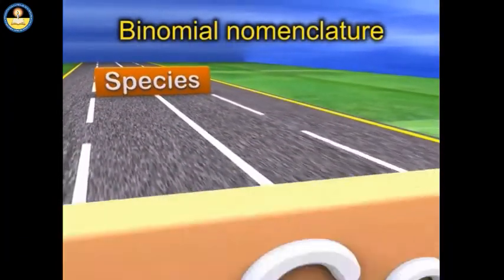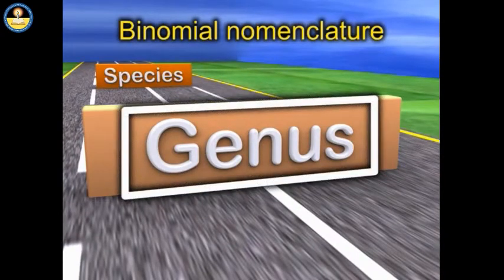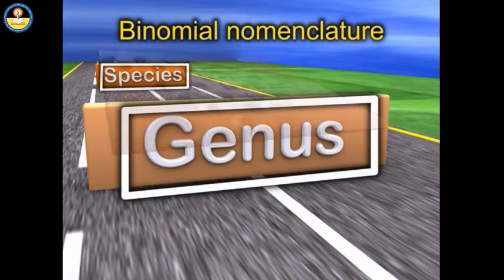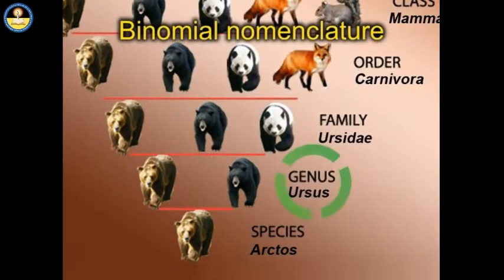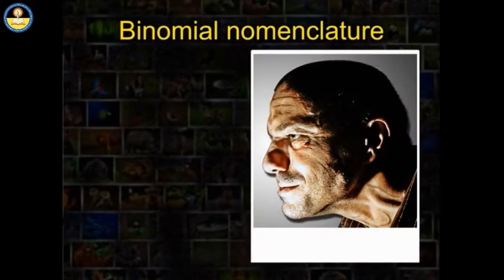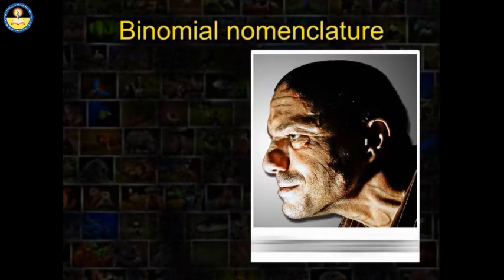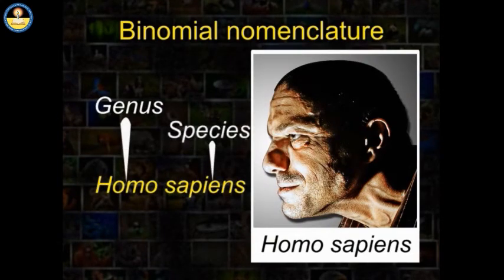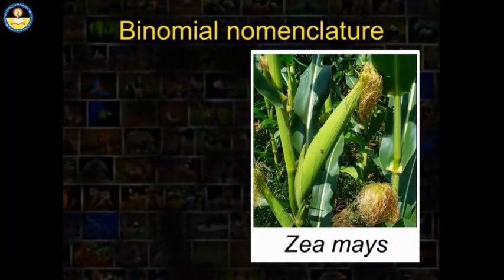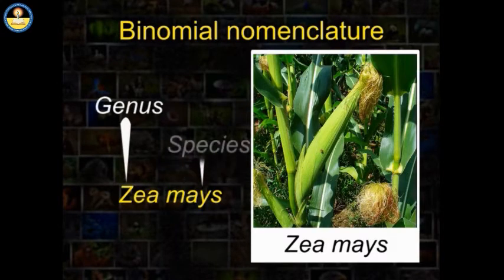Two categories — Genus and Species — out of the hierarchy of classification are used while naming an organism. A genus is a higher-level category that includes one or more species under it. For example, Linnaeus described the name of modern humans as Homo sapiens. Homo is our genus and sapiens is our species. In the scientific name of maize, Zea mays, Zea is the genus whereas mays is the species.